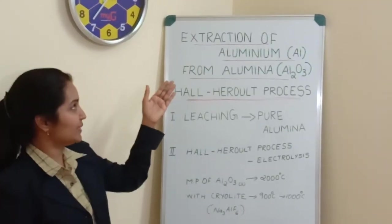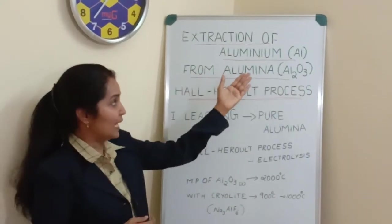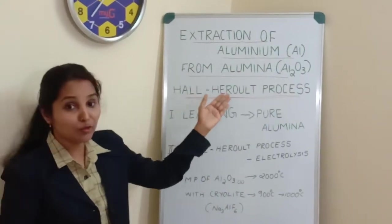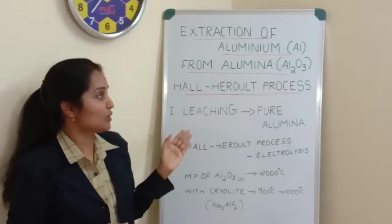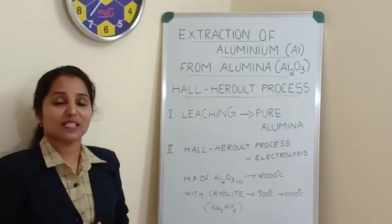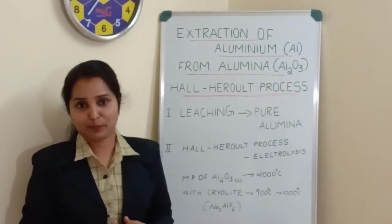Today in this session we will have the topic Extraction of Aluminium from alumina or Aluminium Oxide and this process is also known as Hall-Héroult process.